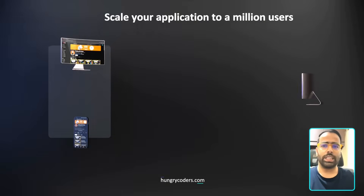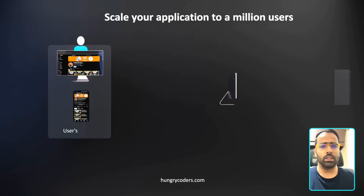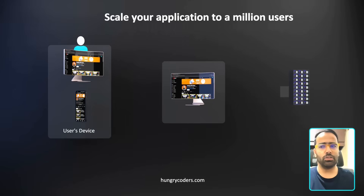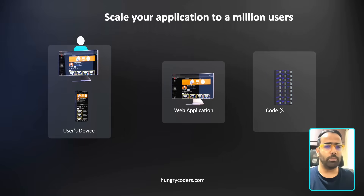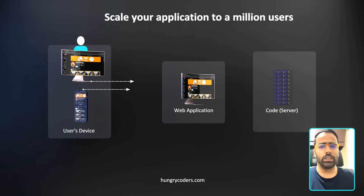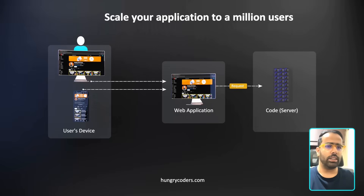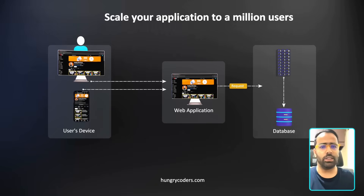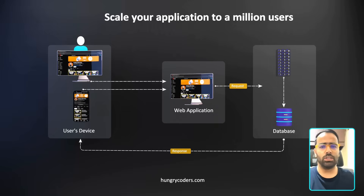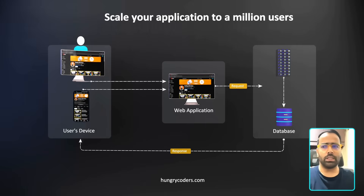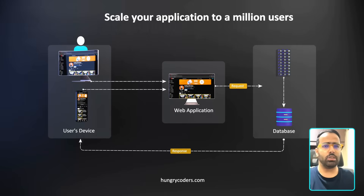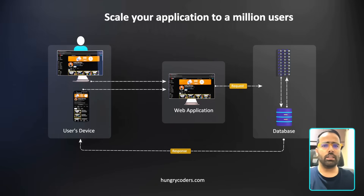This video is all about scaling your application up to millions of users. In a legacy application, you have one web application deployed on a server. The user requests your application, which sends the request to the server, the server goes to the database, and gives the response back to the user. This design is more than enough for a small-scale application with less data and less traffic.